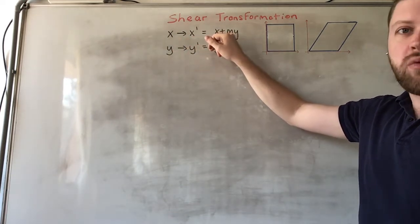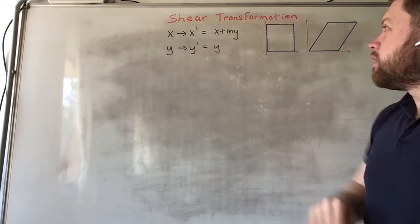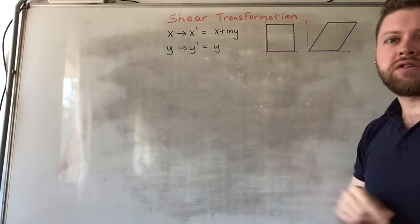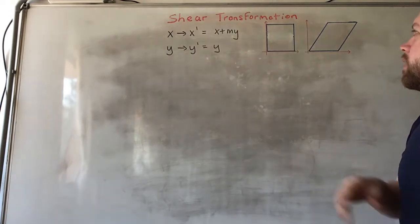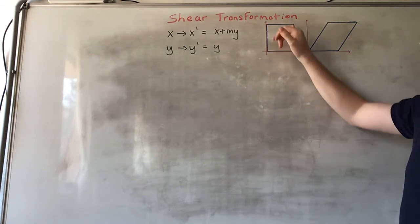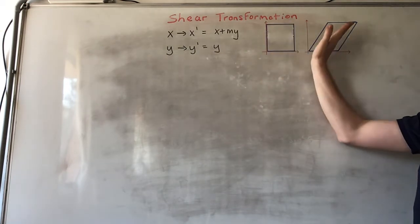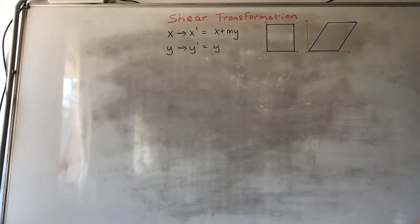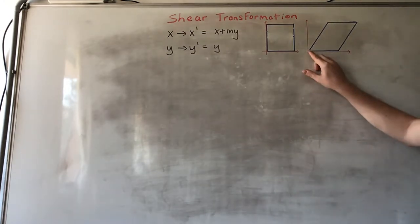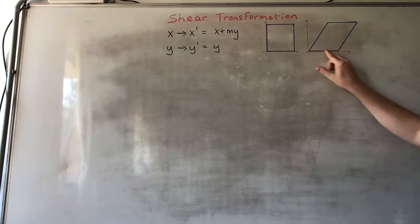What that means essentially is if you have a box, a square type thing here, the x coordinate of each of these points will get pushed over in proportion to how far away from the x-axis it is. So you can see that the line on the x-axis doesn't get moved at all.